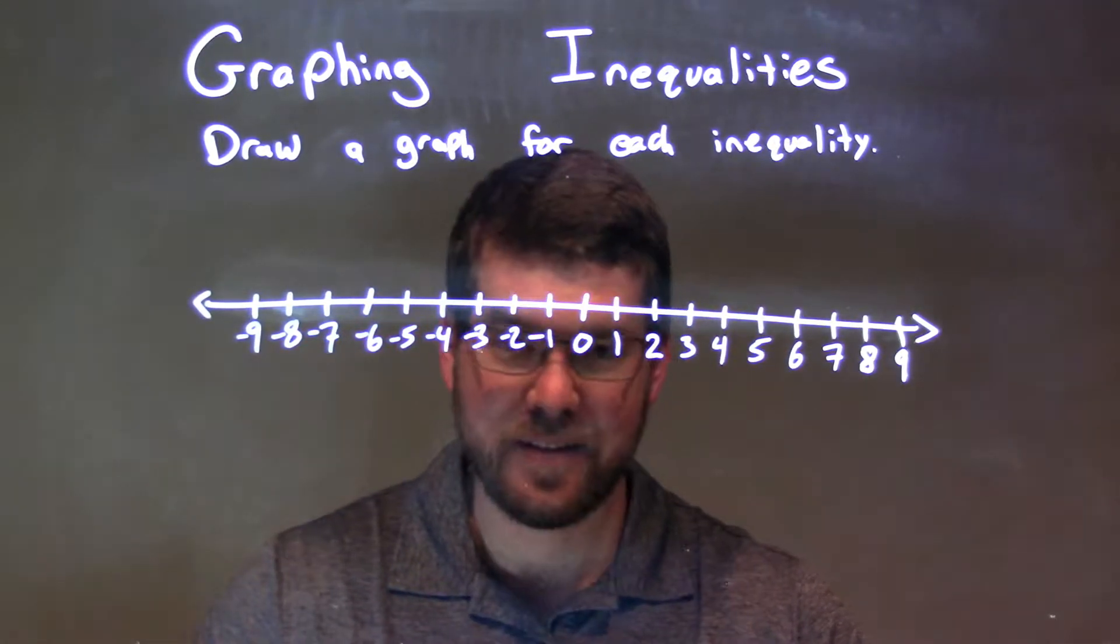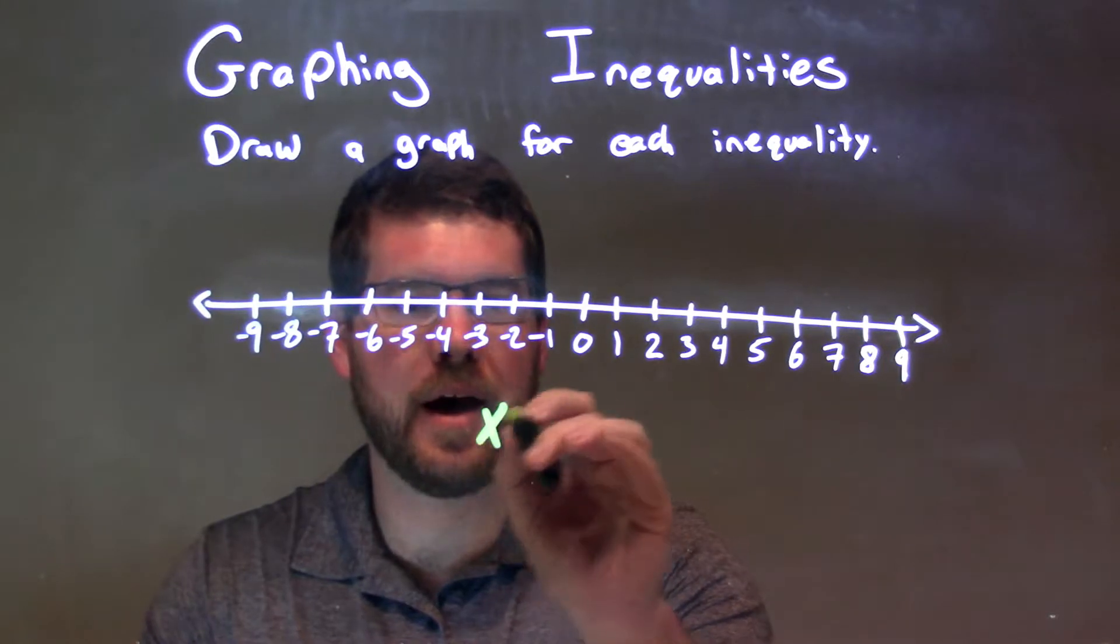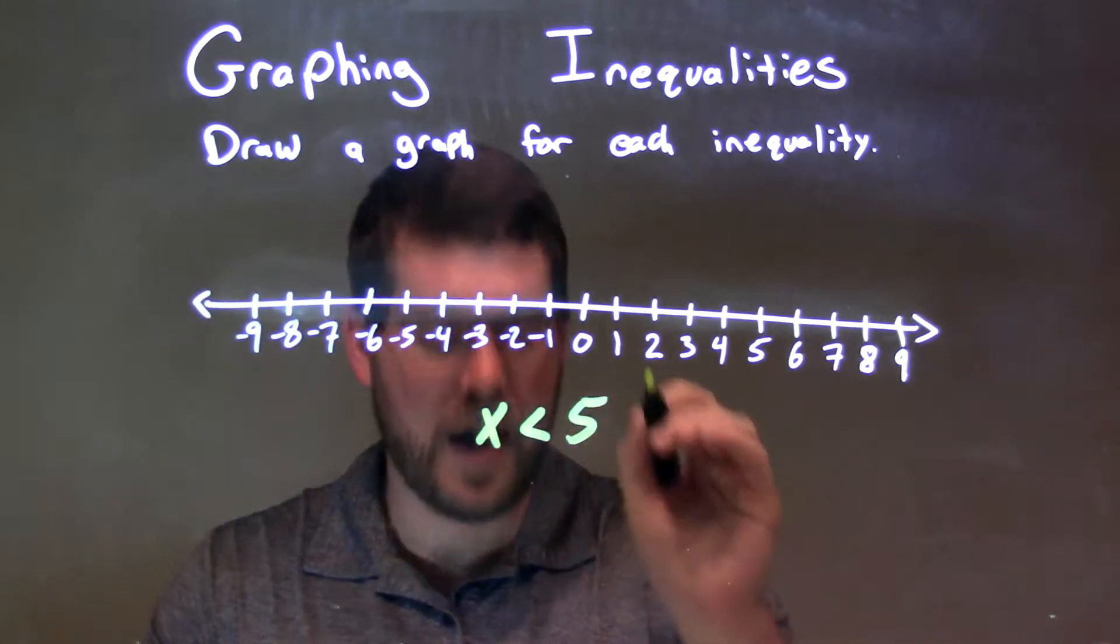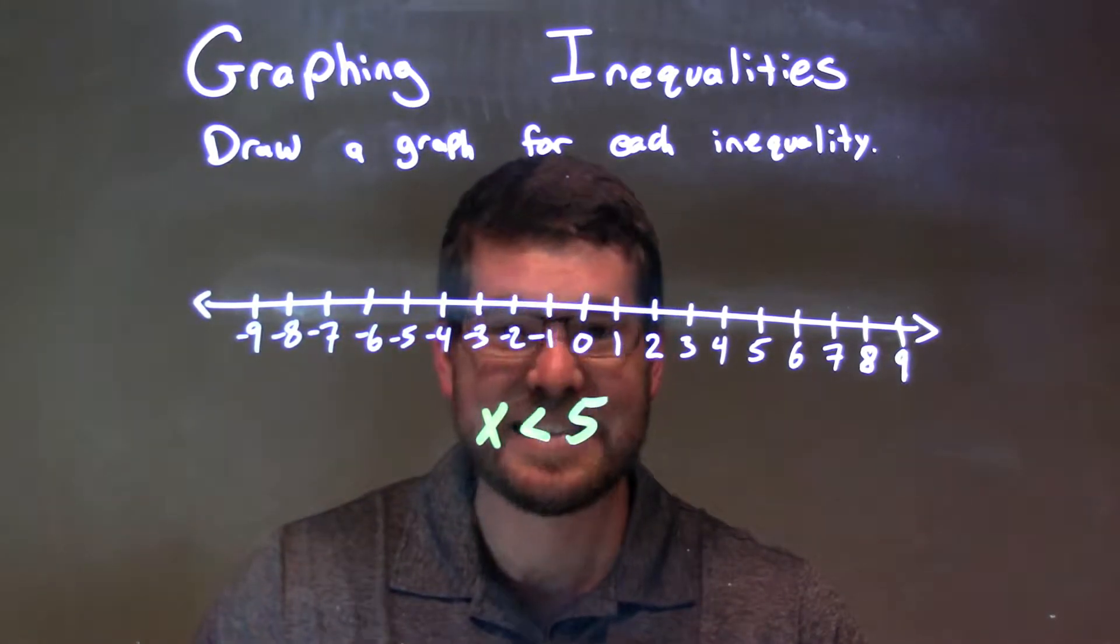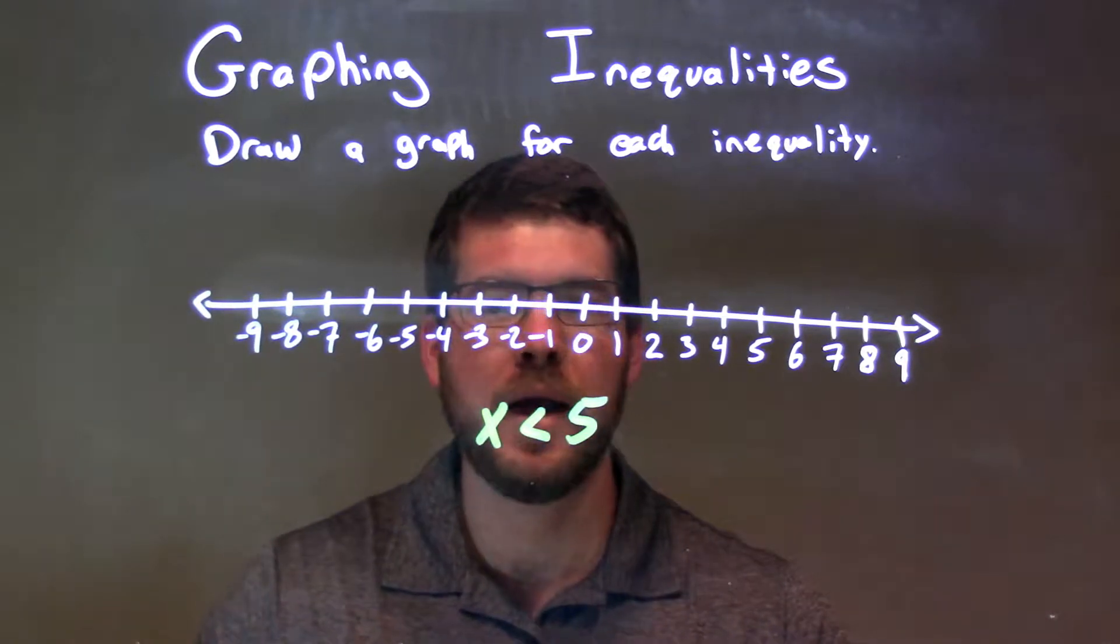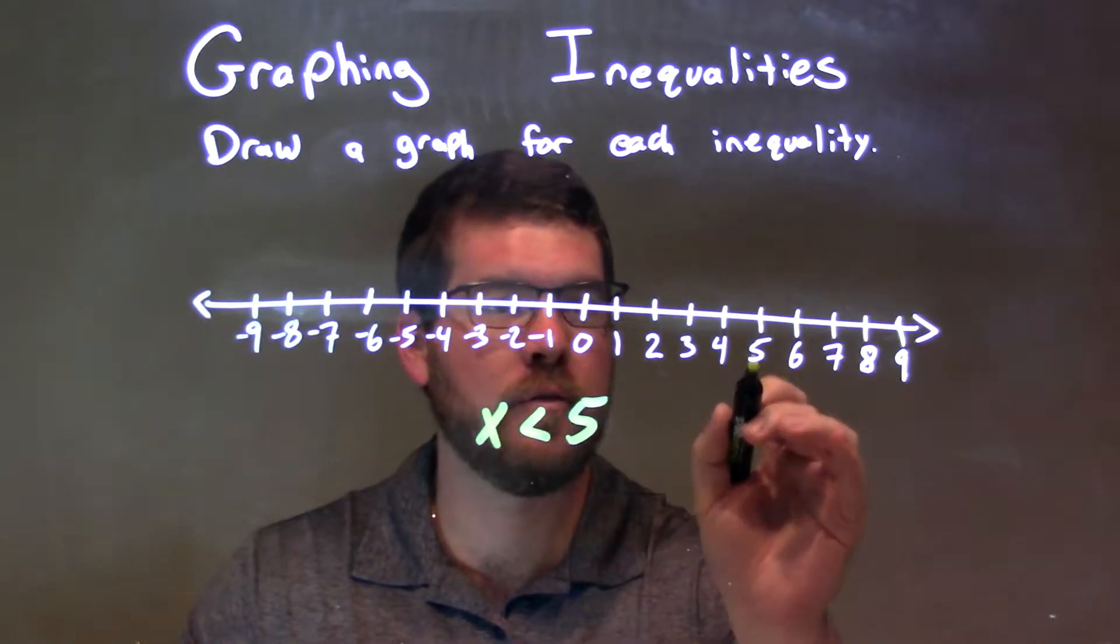So if I was given this inequality, x is less than 5, what we have here is we start at 5, got it right there.